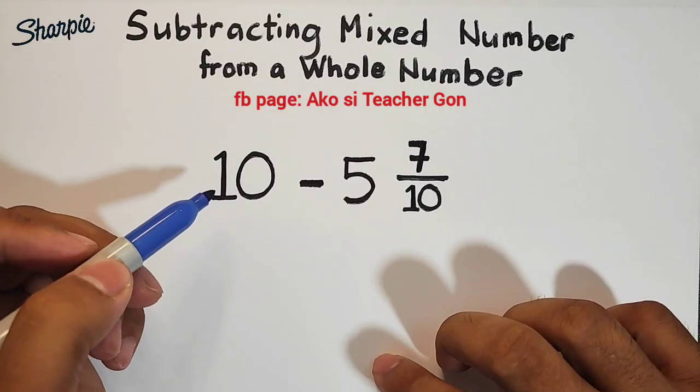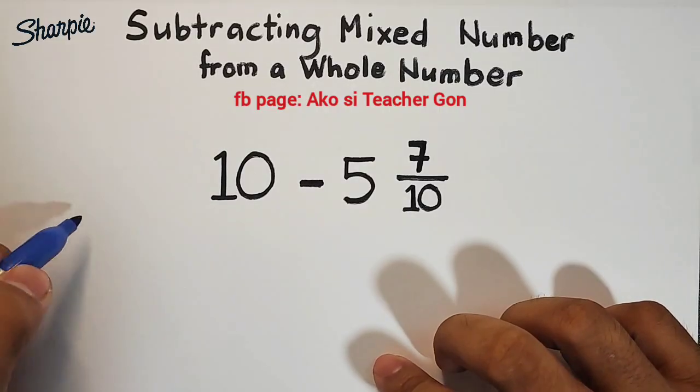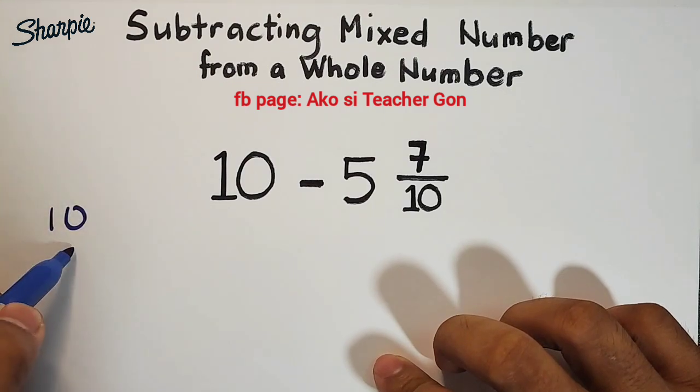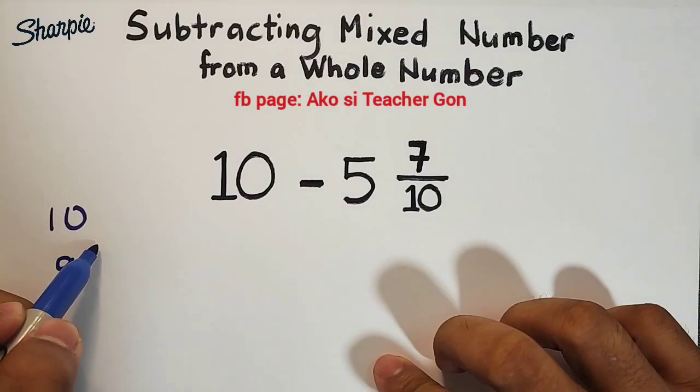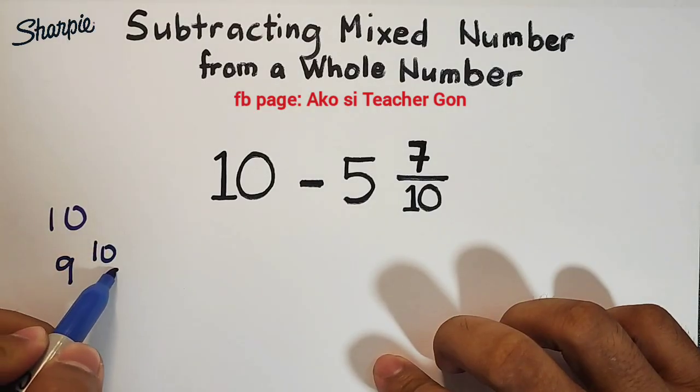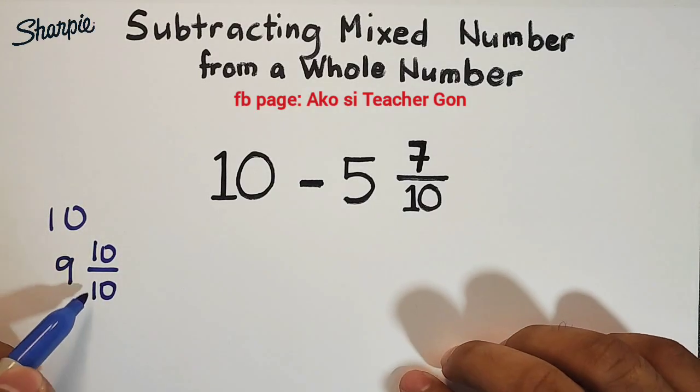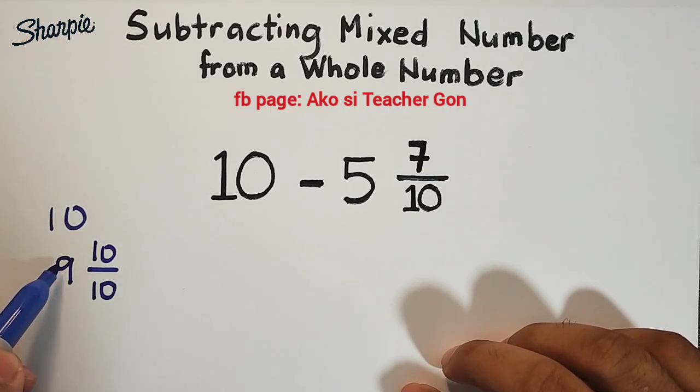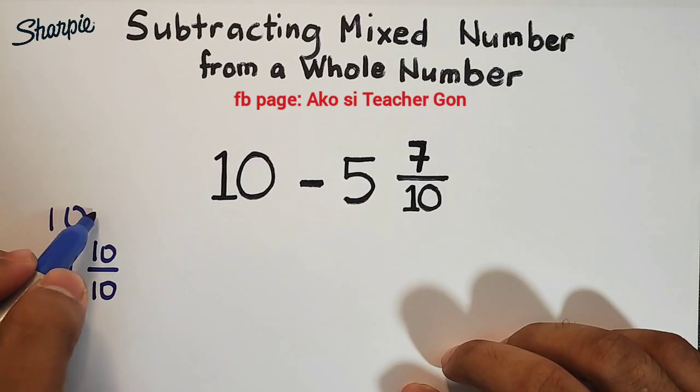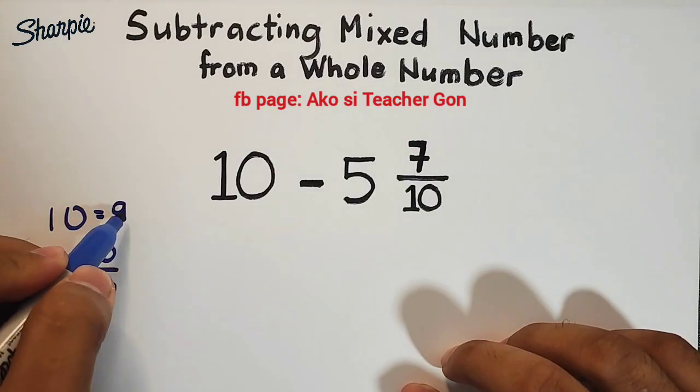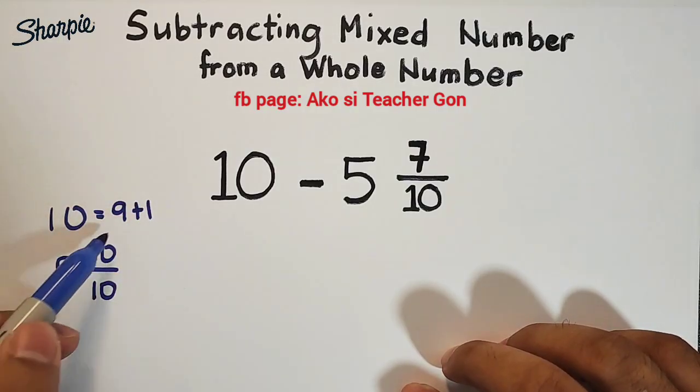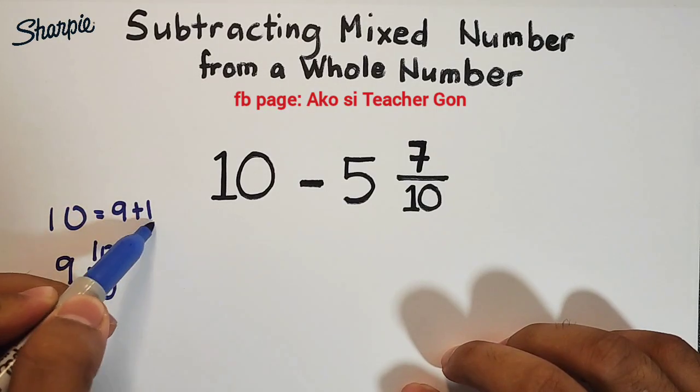So what will happen? This 10—we have 10—we can regroup this 10, and this one is equal to 9 and 10 over 10. So why 10 over 10? What happens is that we have expanded 10. 10 is just like 9 plus 1. This is 9 and this is 1.